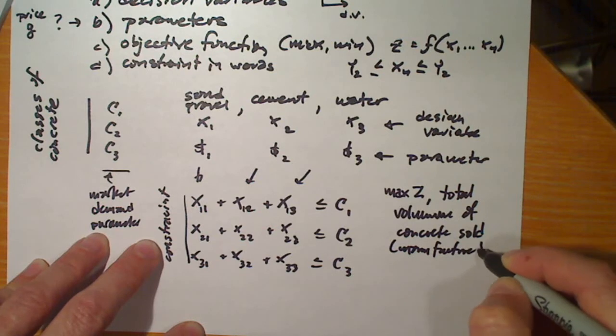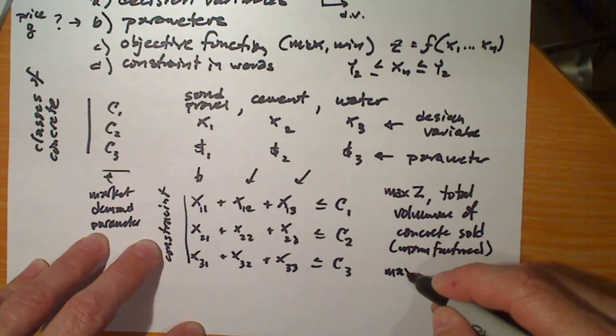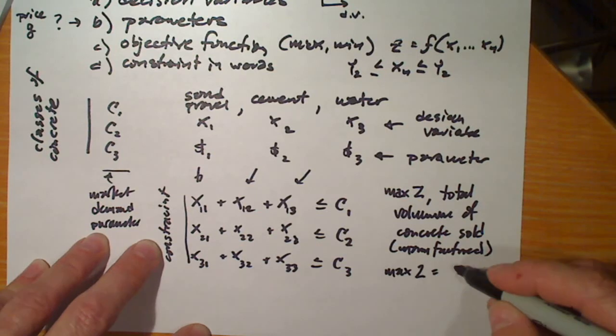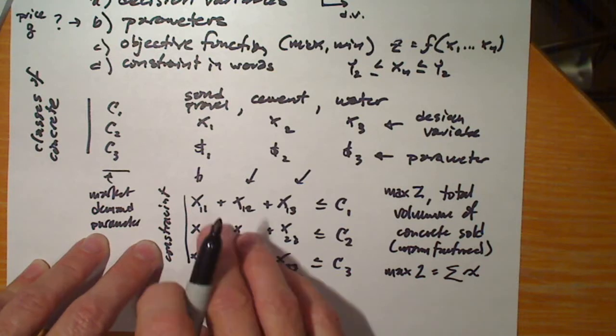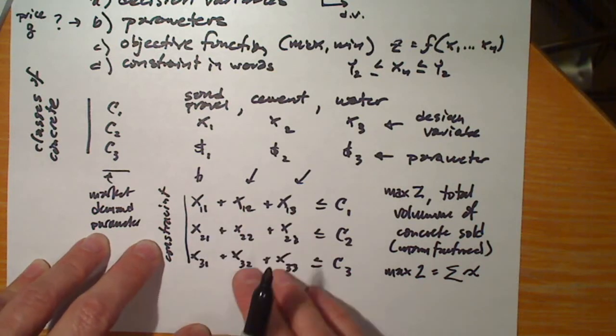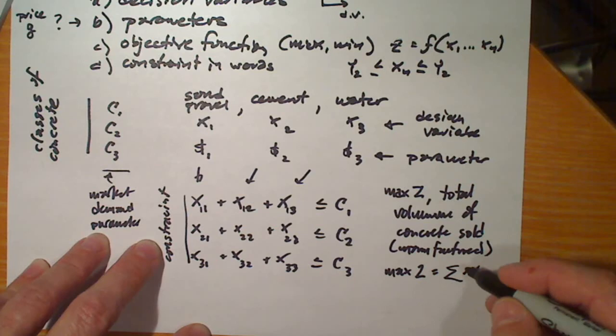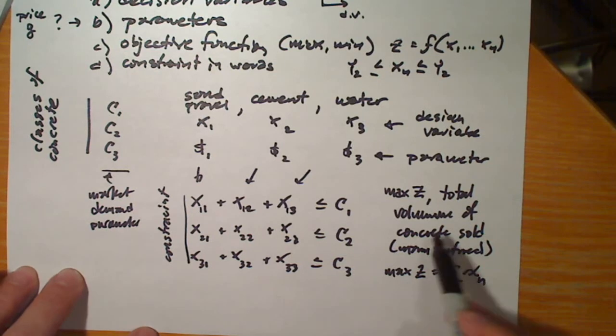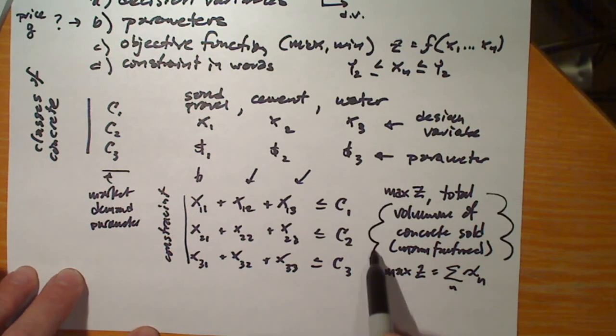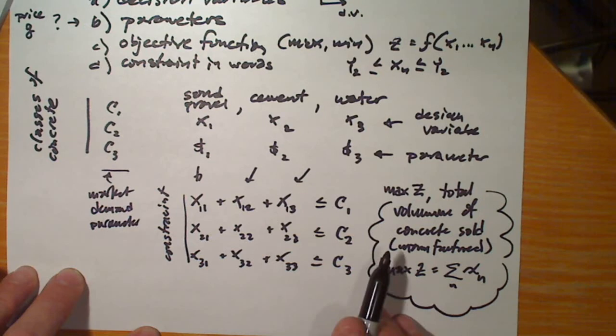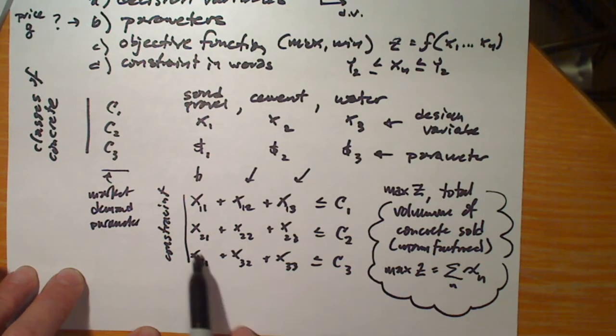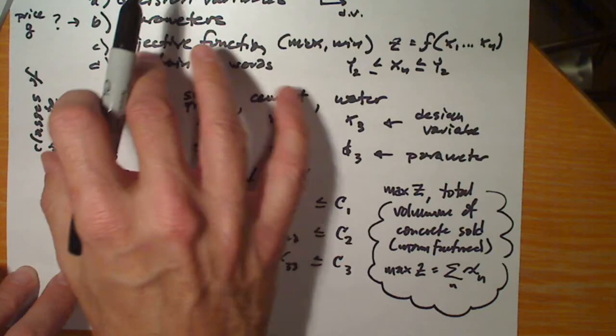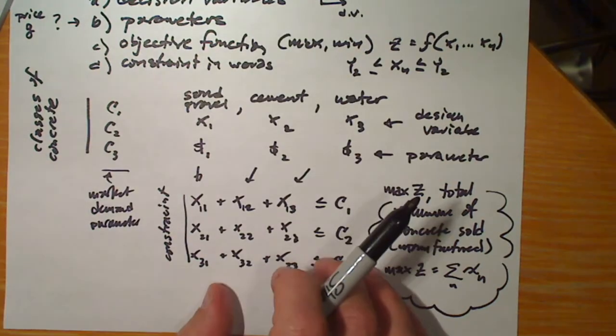And what would that look like? Well, max z, in this case, would be the sum of all of the x's. We want to maximize the combination of sand, cement, and water that the market will allow or that the market will purchase. So we've described in general the objective function. We've identified the design variables. We've described some of the parameters that govern the problem.